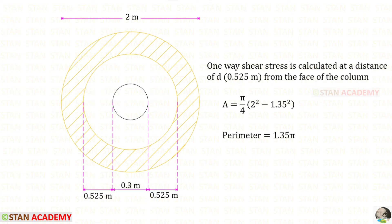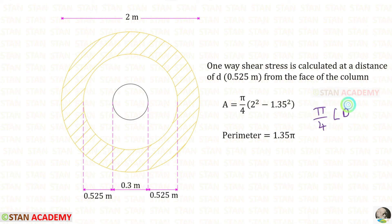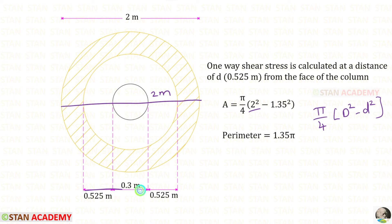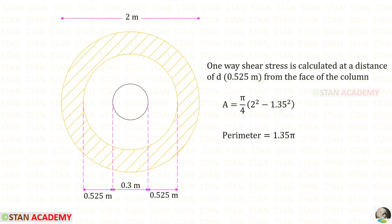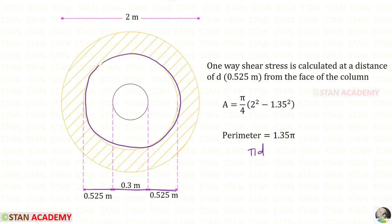We find the shaded area using the formula pi by 4 into (D squared minus d squared), where D is 2 m and d is 1.35 m. We also find the perimeter as pi times 1.35, which is 1.35 pi.